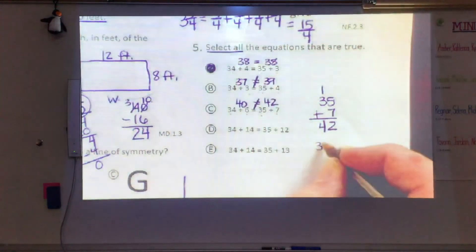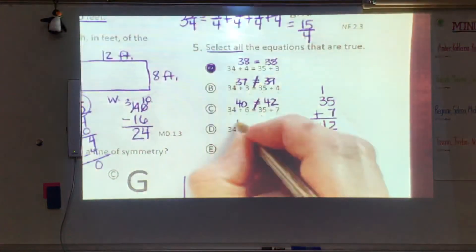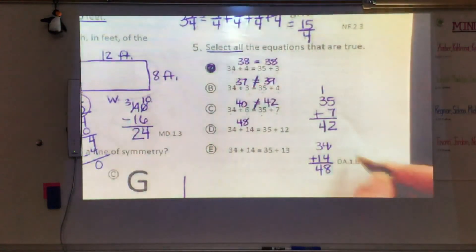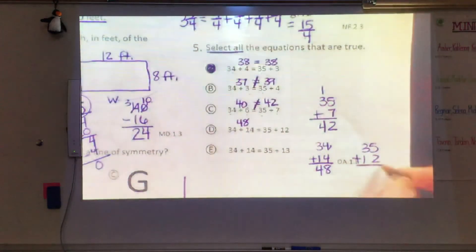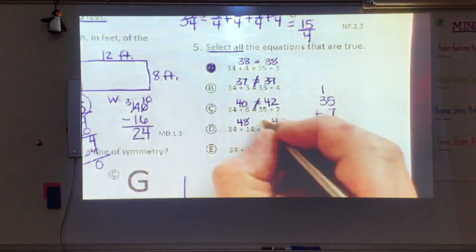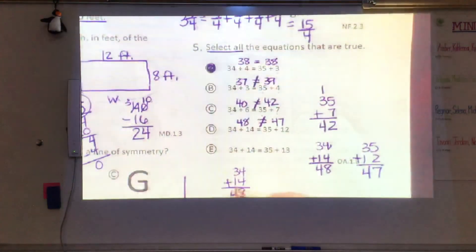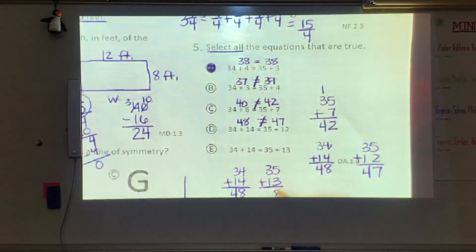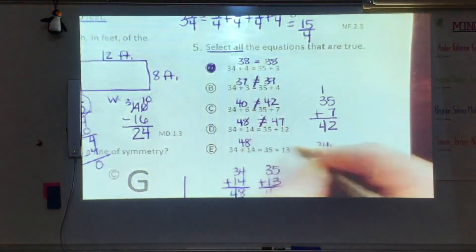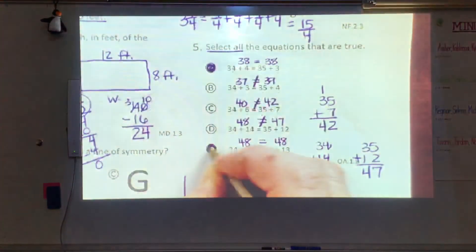34 plus 14. That's 48. And then if we add 35 plus 12. 5 and 2 is 7. And 3 and 1 is 4. So 48 is not equal to 47. And then we have 35 plus 13. 5 and 3 is 8. And 3 and 1 is 4. So they're both 48 on this one. So they are equal. So you should have bubbled in A and E for number five.